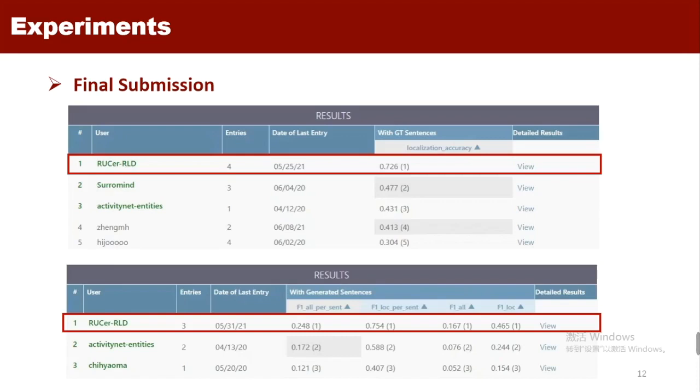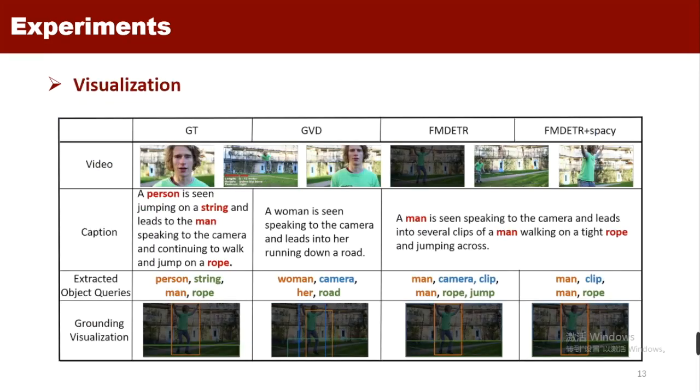We also visualize our method's performance. In the case shown in the figure, as for caption generation, our method targets 'man' and 'rope' successfully compared to the baseline. When using spaCy, words 'drunk' and 'camera' are recognized as non-objective words and are excluded. As for grounding, the fine-tuned MDETR grounds more accurately for word 'man'. Our proposed method improves the performance of the whole system.